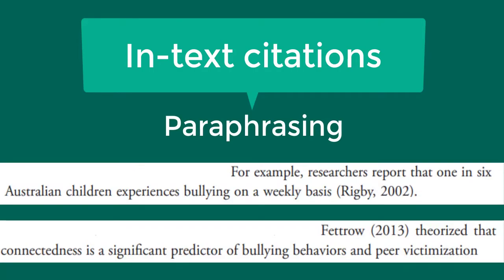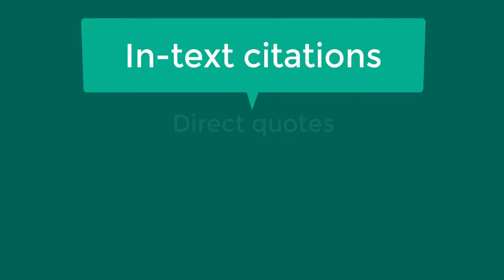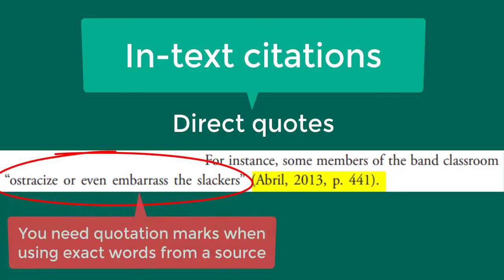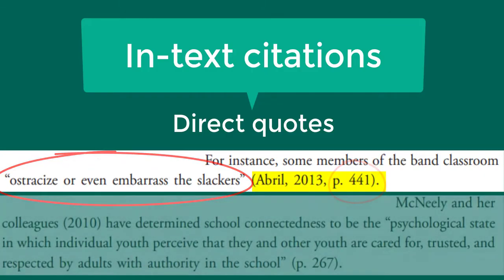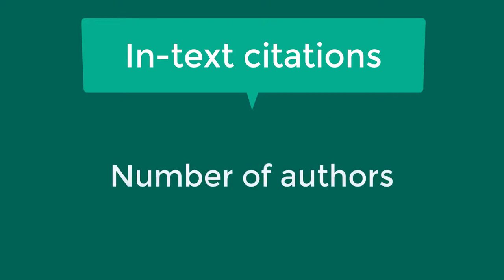The author-date template for in-text citations is used when you are paraphrasing. Paraphrasing means you are writing in your own words without directly quoting the material. If you directly quote the material using the source's exact words and quotation marks, you will also need to include the page number in your citation by listing 'p.' and the page number. If you mention the author's name in the sentence followed by the year, the page number will still be at the end of the sentence.